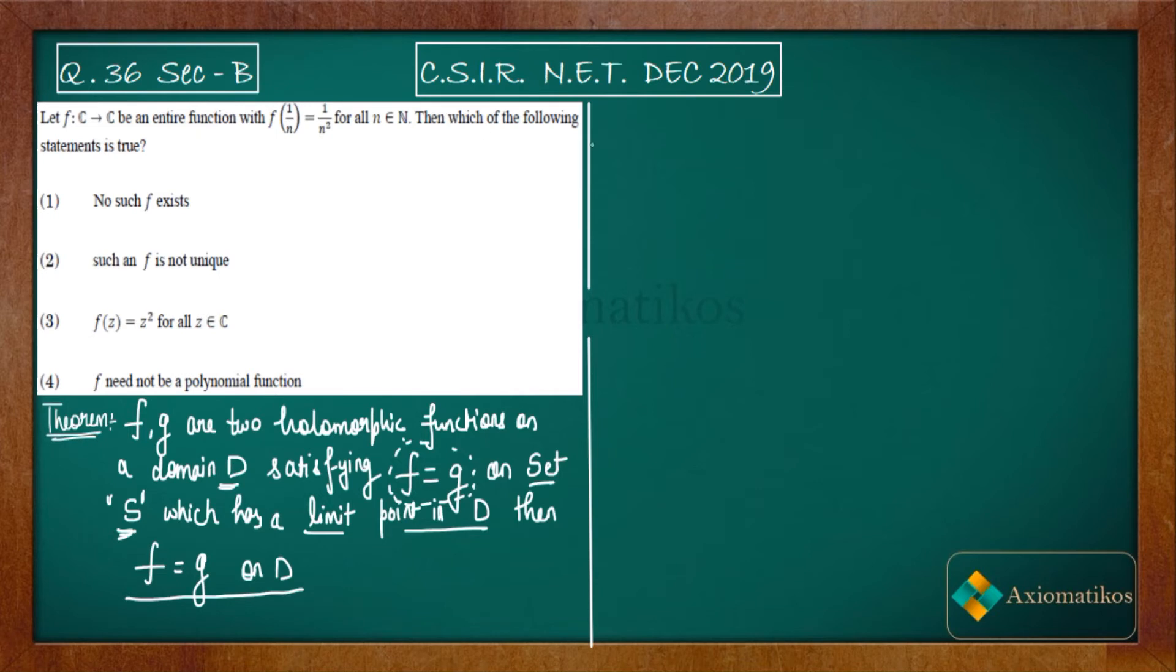Now in your case it was given to you that f(1/n) = 1/n². So this is what will give us motivation to find out g. I will choose my g(z) to be z², and also we see this is also entire and it is defined on the complex plane.